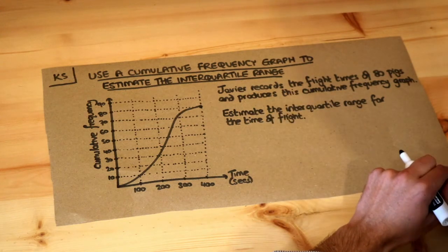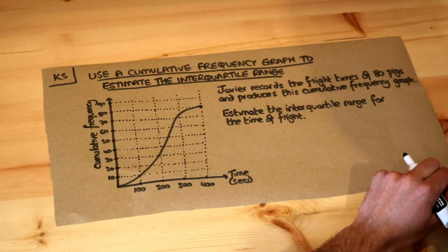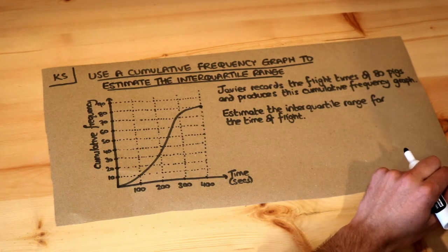Let's read the question. Javier records the flight times of 80 pigs and produces this cumulative frequency graph. Estimate the interquartile range for the time of flight.